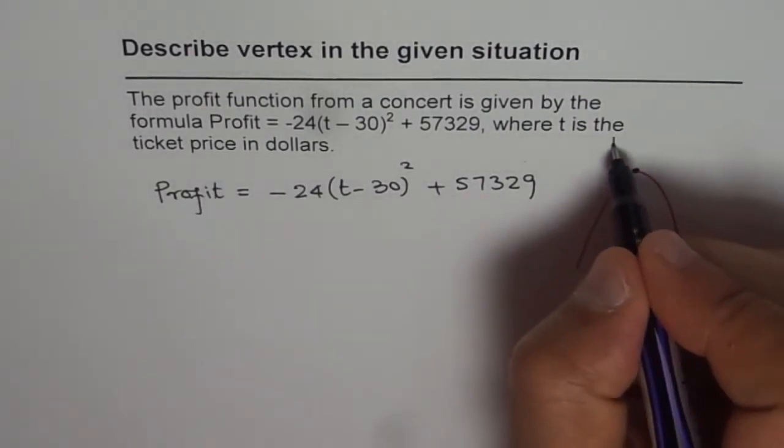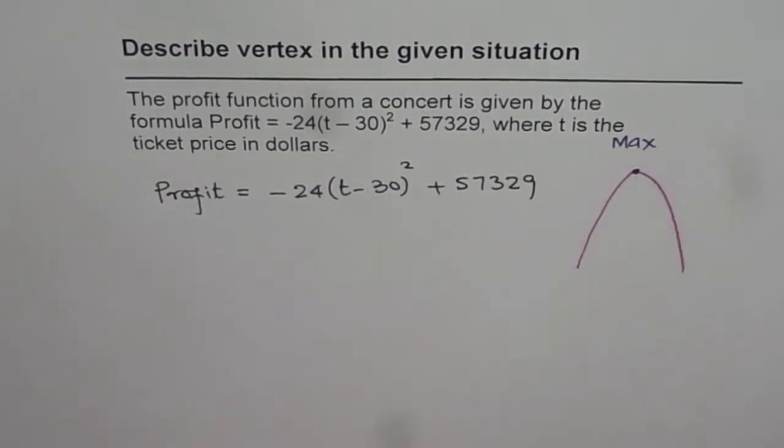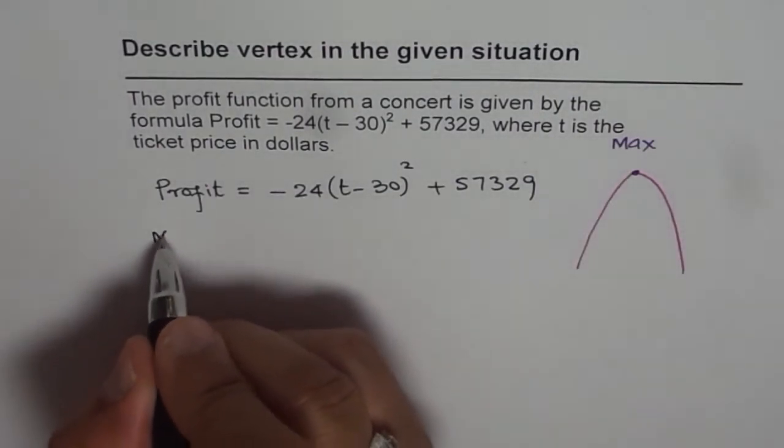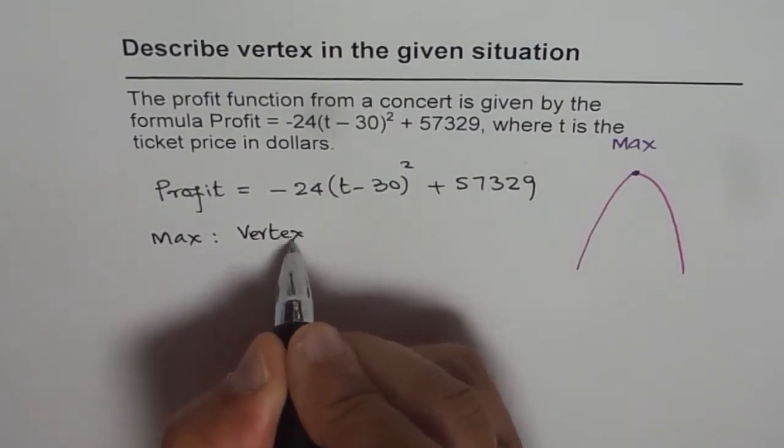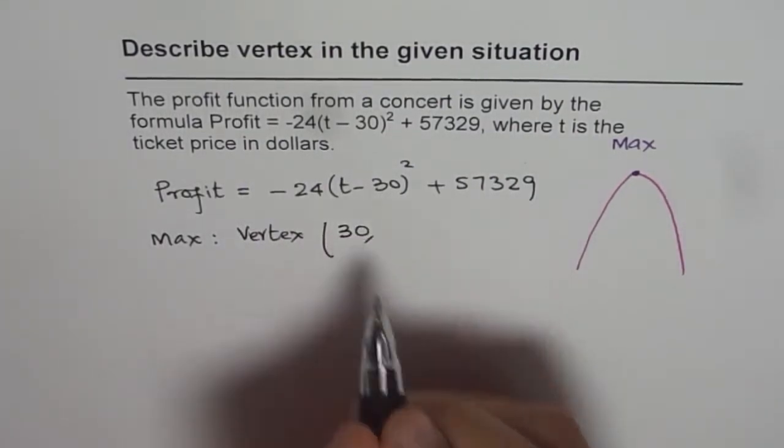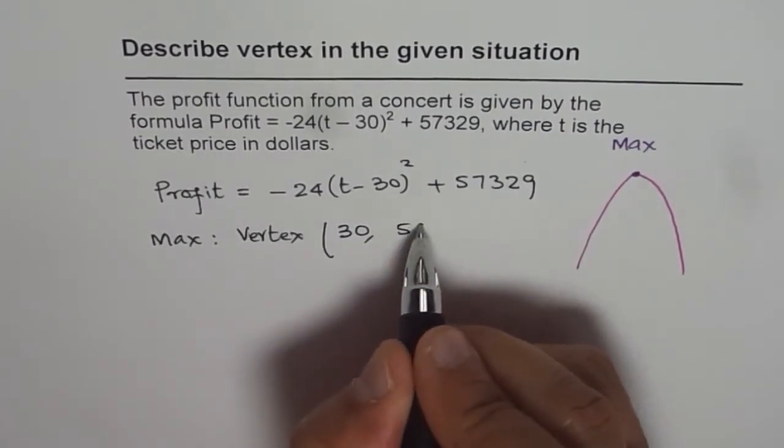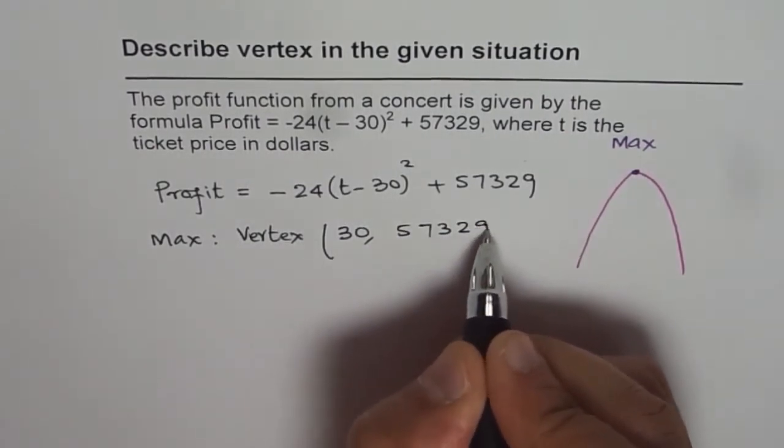So we have a maximum here, and the coordinates of the vertex, which is our maximum, which is our vertex. The coordinates are 30, 57329.